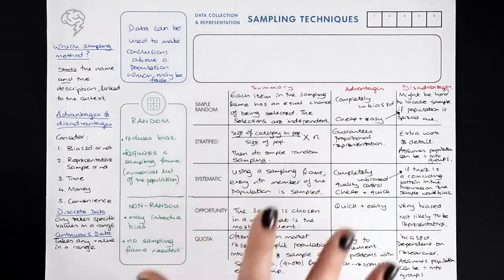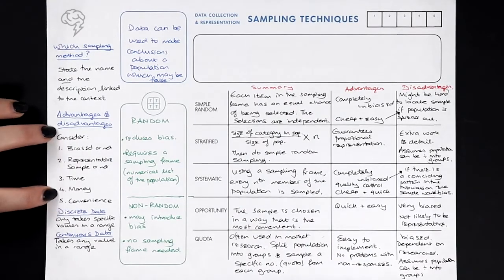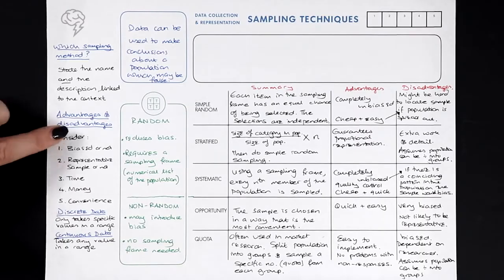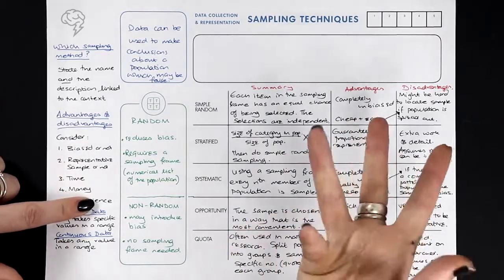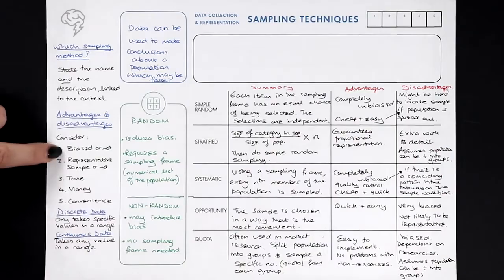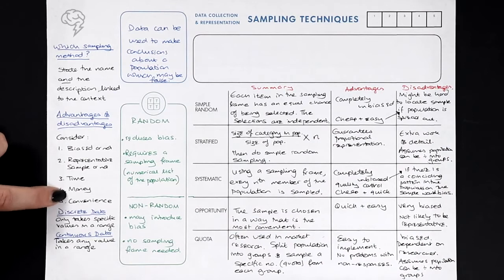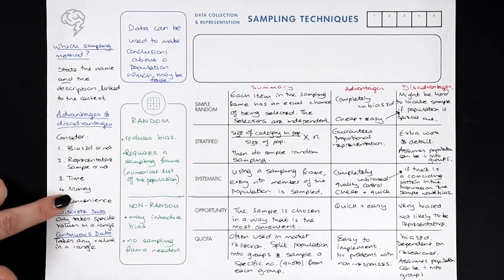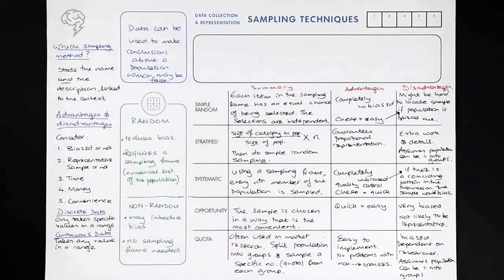The most important thing when writing answers is to go through the five considerations in your head and say whether each is an advantage or disadvantage for the method in question — then reference it and explain how important it is. That's the most likely way to pick up all the marks on these difficult explain-type questions.